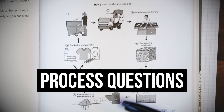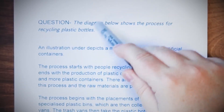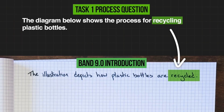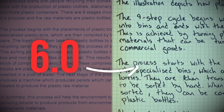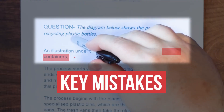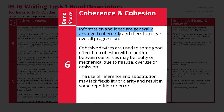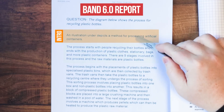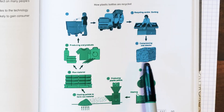If you're worried about task one process questions, this is the video for you. One of our students gave us their task one report and we're going to show you that with just a few simple changes, we can transform a band six report into a band nine report. I'll show you the key mistakes that most students make that lead to low scores, and then show you just how easy and simple it is to get a band eight or even nine by following a few simple rules.